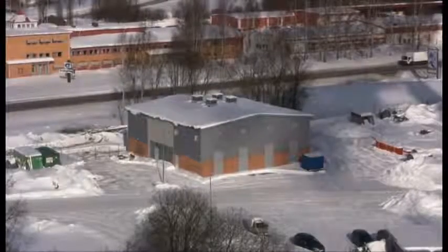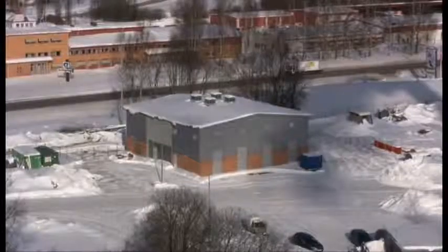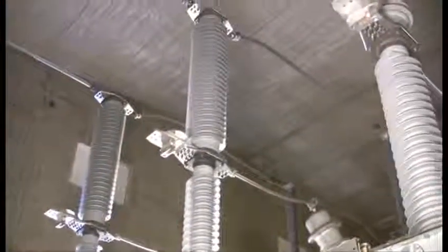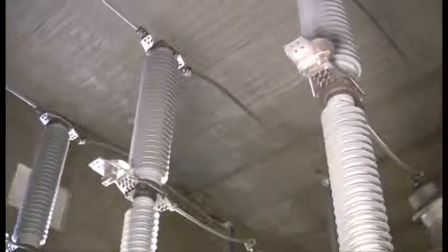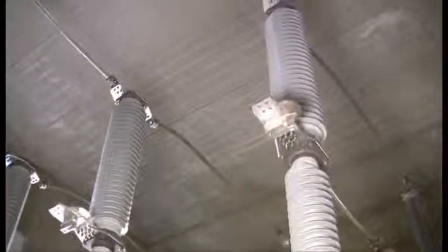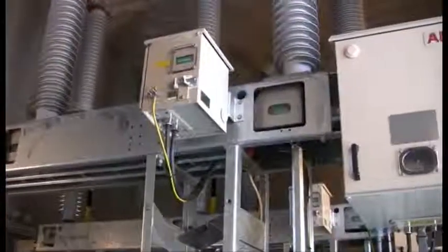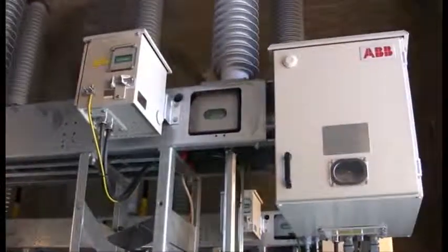ABB has delivered a turnkey 145 to 10 kilovolt substation to Borling Energy. There are two line bays and two transformer bays on the 145 kilovolt side. All bays are equipped with ABB's space-saving disconnecting circuit breakers, DCB.